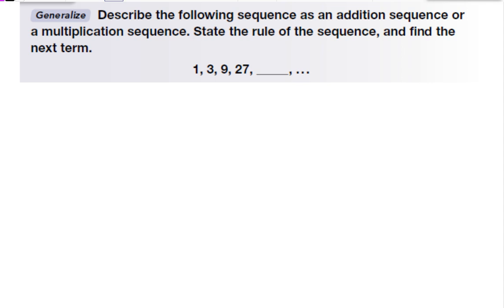I go 1, 3, 9, 27. So to check I can say okay, is it an addition sequence? If it's a sequence I follow the same rule for every number. So I think okay, how do I go from 1 to 3? Well if it's addition I would add 2. But then how do I go from 3 to 9? Well that's plus 6. And then 9 to 27 is plus 18. So the rule is not the same so it cannot be addition.